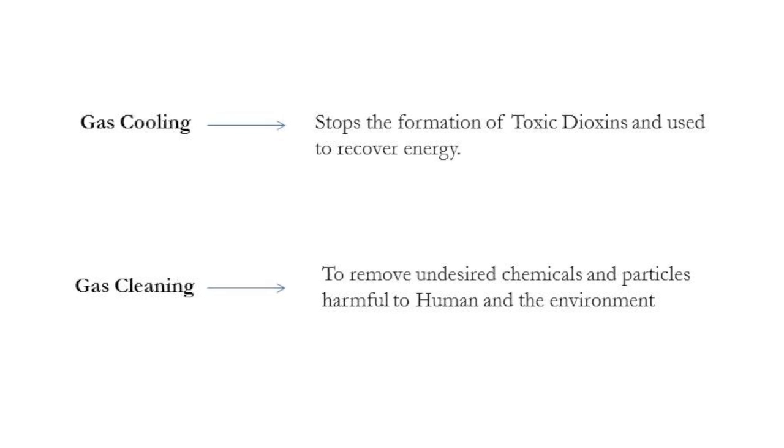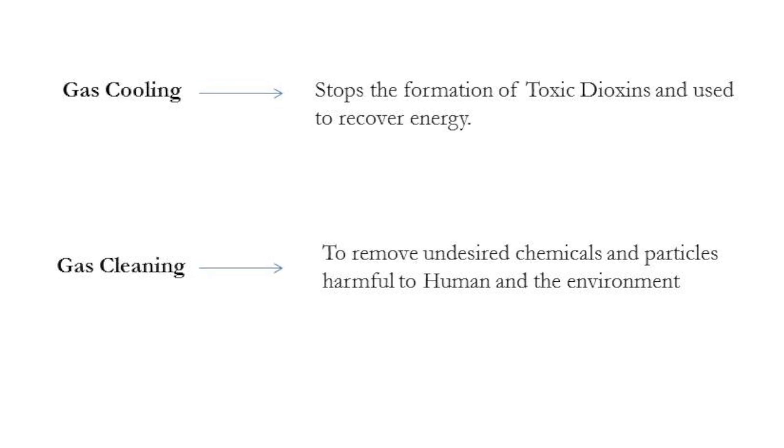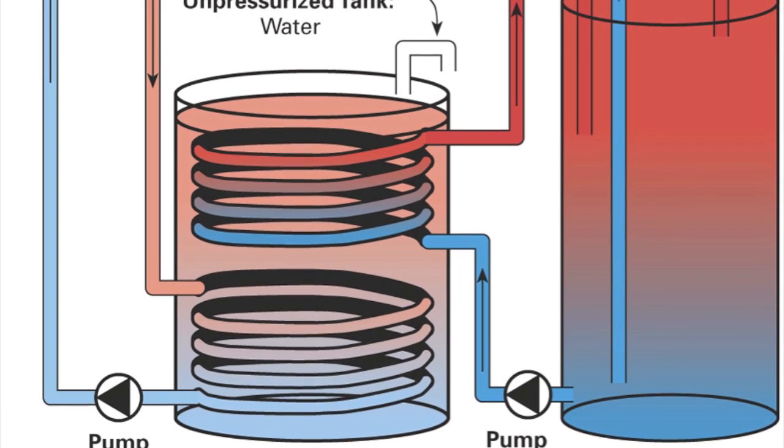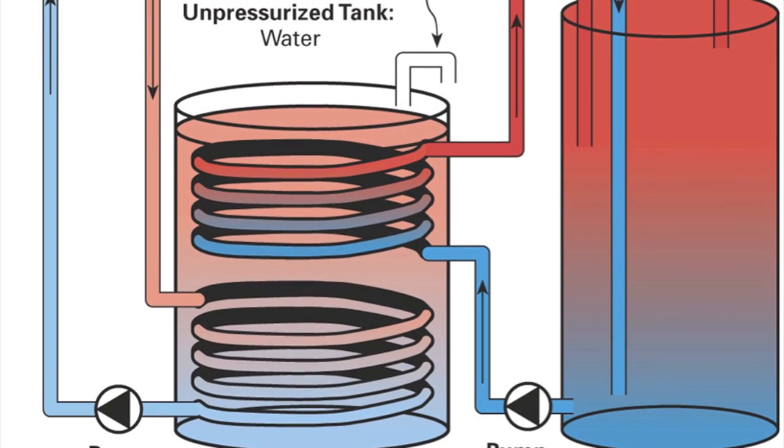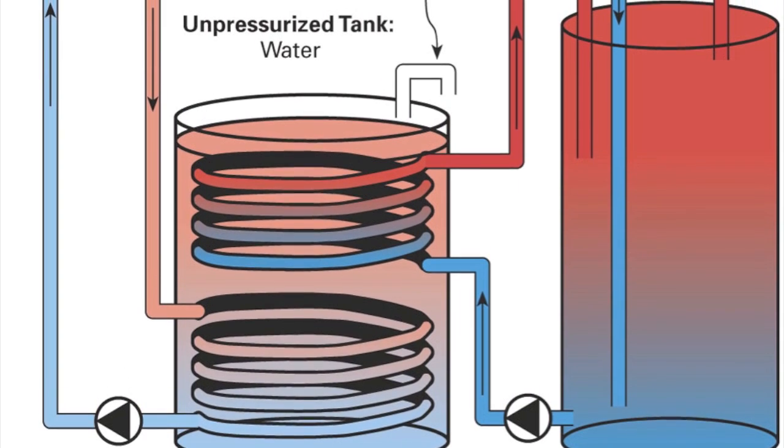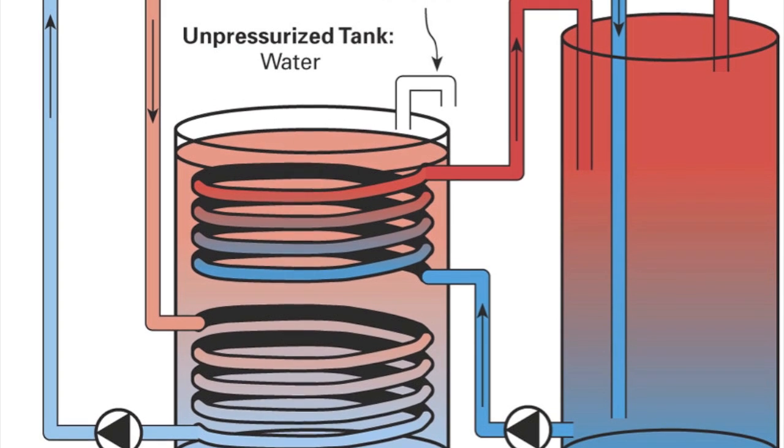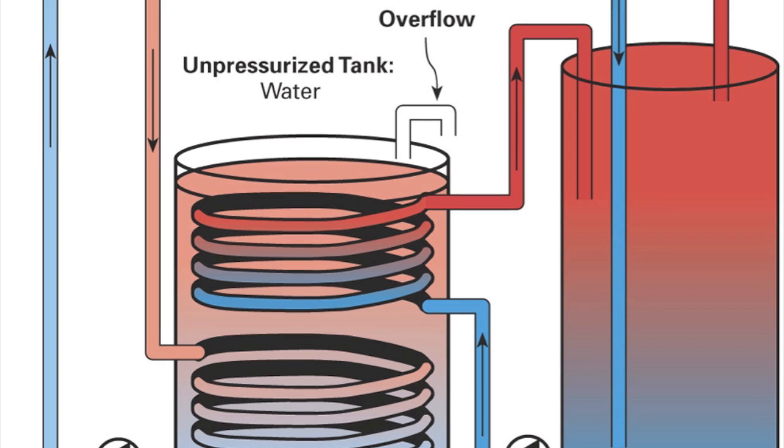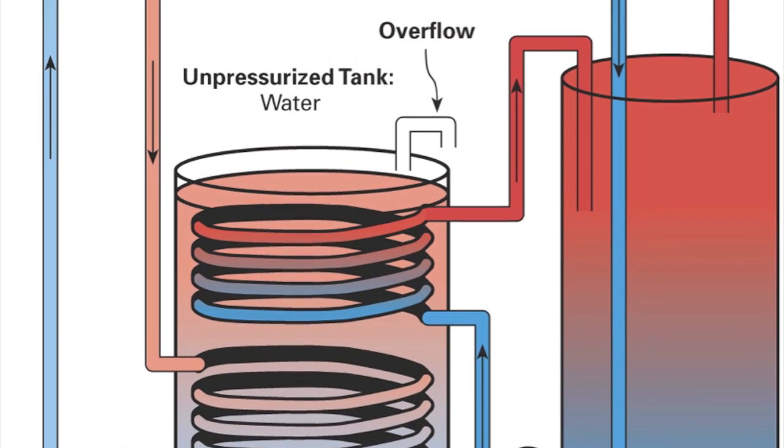Cleaning is essential to remove undesired chemicals that could be harmful to human health and the environment or damaging to the equipment. First, the gas is cooled down to a temperature of around 600 degrees Celsius. This is mainly done to prevent the formation of toxic dioxins. Some companies choose to recover the lost heat from gas cooling through heat exchanging.